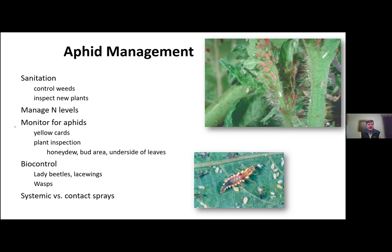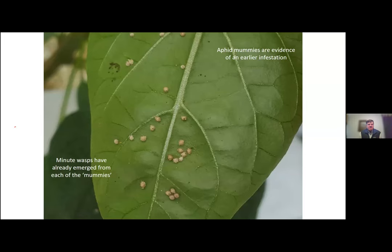In terms of biological control, we have great options — lady beetles, lacewings, and wasps that work extremely well and have been proven for about 70 years. The downside in unscreened high tunnels is they tend to fly away. We do have systemic and contact sprays to manage aphids. This is an example of what biological control of aphids looks like — these aphids have been killed by a wasp, with little holes in the back where the wasp completed its development and emerged from what we call the mummies on the leaf.